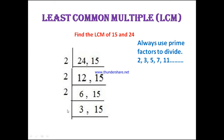Now can we take 2 again? No, because 3 and 15 cannot be divided by 2. So let's take 3. Both 3 and 15 are divisible by 3. In 3, how many times does 3 go? 1 time. In 15, how many times does 3 go? 5 times. Check: 3 ones are 3, and 3 fives are 15.